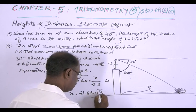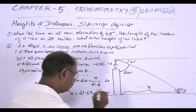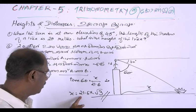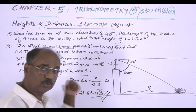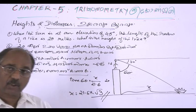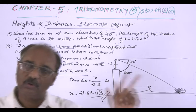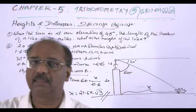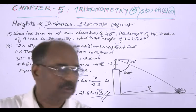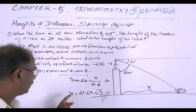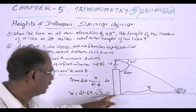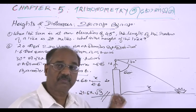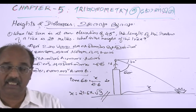tan 60 is equal to opposite side XZ divided by the base. So 21.6 times tan 60, and tan 60 equals root 3. Substituting here, this gives us the distance from the foot of the building as 21.6 root 3.